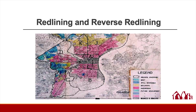Reverse redlining is another term you may hear, and that references a type of predatory lending practice in which the lending providers target a demographic or regional area to sell a bad product — meaning an unsuitable or disadvantageous product. That can mean a higher rate, higher risk, higher cost, worse terms and conditions.